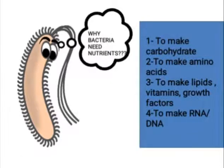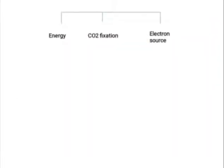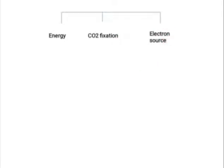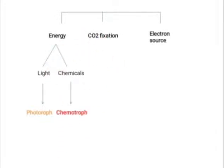On the basis of nutrition we can classify or categorize the bacteria, but before classifying bacteria on the basis of nutrition you have to remember three things: the factor of energy, the factor of CO2 fixation, and the factor of electron source. Some bacteria get energy from light — these are known as phototrophs — and some bacteria get energy from chemicals — these are known as chemotrophs.